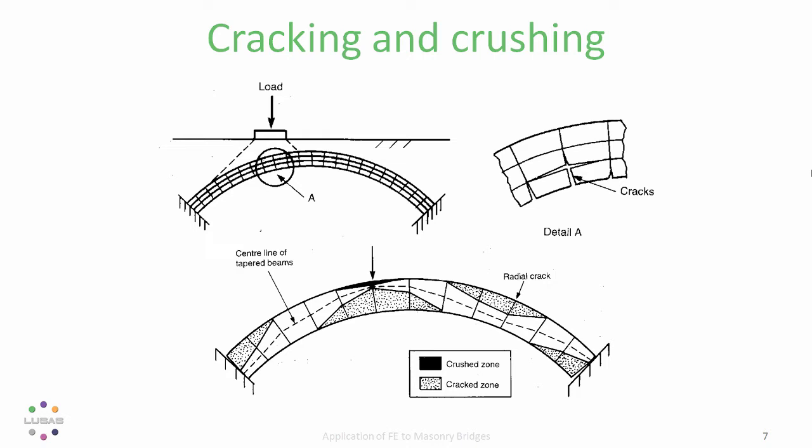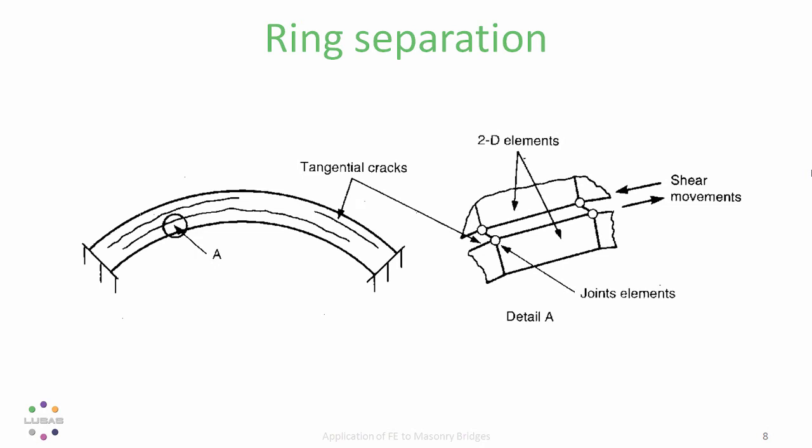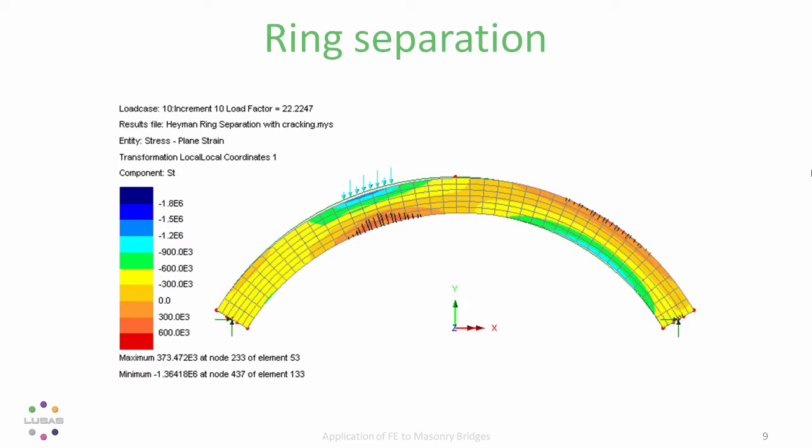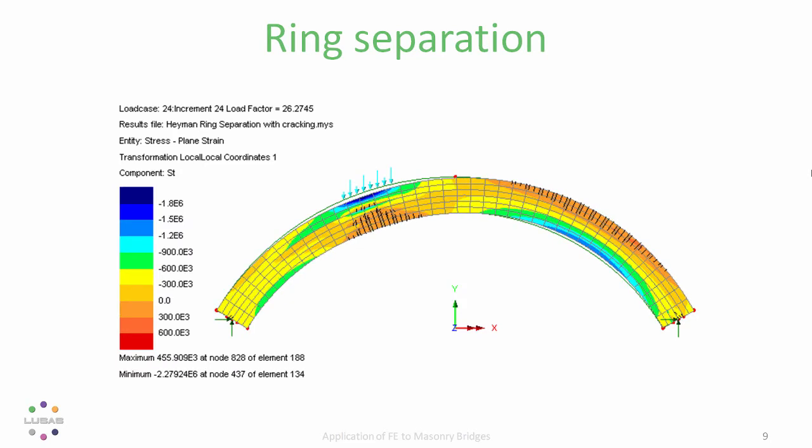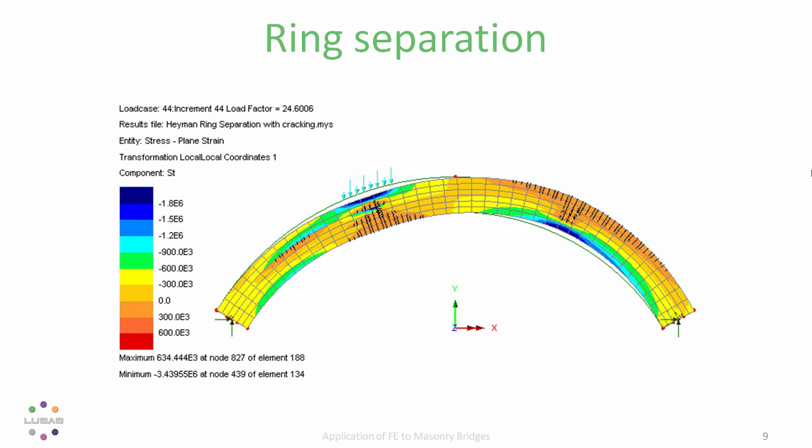But this is not the only way an arch can fail, there is ring separation. And it is possible to include this in a finite element model too, by including joint elements or delamination planes. So this model includes that behaviour. The collapse load we saw to be about 38.5 tonnes is reduced here to about 28 tonnes.